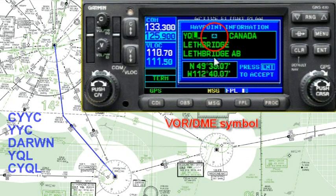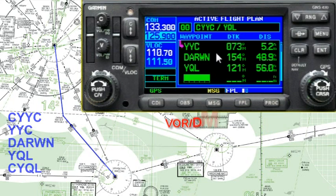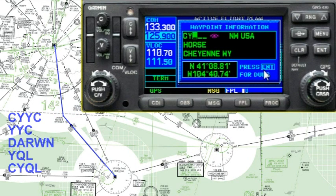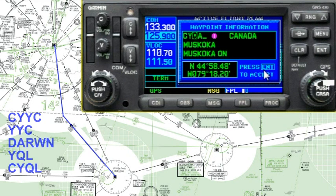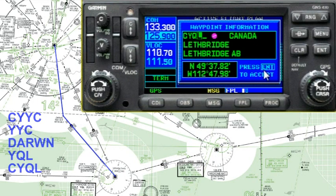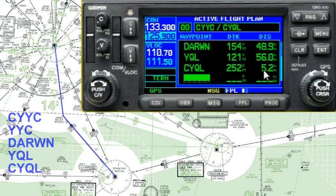Check that this is again what we're looking for and enter it. Check the bearing and distance against your map — it's looking good. Then finally, the airport. At this point we're basically finished. Some people like to add some additional waypoints off the end of the flight plan.